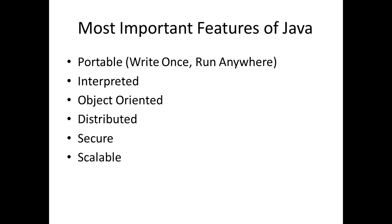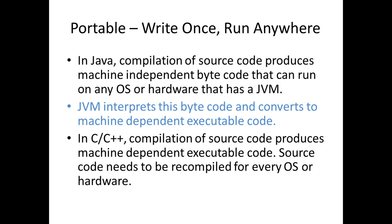Java can be distributed — Java programs can run on multiple machines and communicate with each other. Java is also secure and scales well with large numbers of users. When you say Java is portable, you write your source code once and run it on Windows, Macintosh, Linux, or Solaris. The Java compiler (javac) produces machine-independent bytecode, which can be run on any OS or hardware that has a Java Virtual Machine. The JVM interprets the bytecode and converts it to machine-dependent executable code specific to each platform.